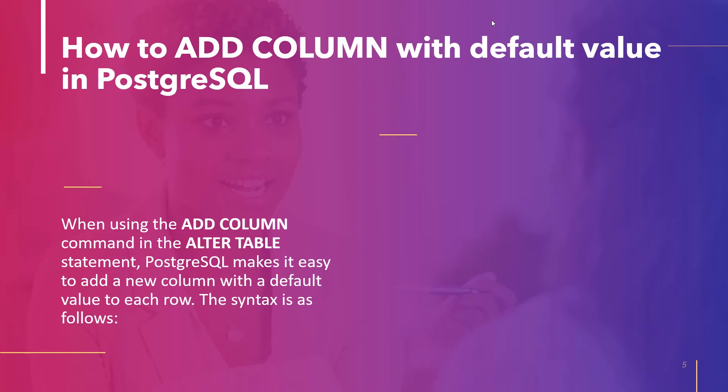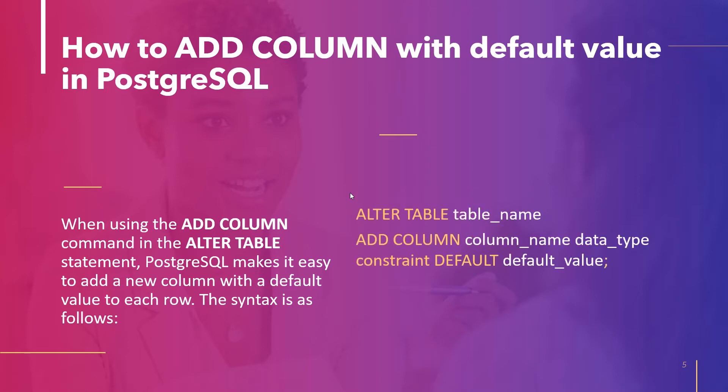The next topic is how to add a column with a default value in PostgreSQL. PostgreSQL facilitates adding a new column with a default value to each row using the ALTER TABLE ADD COLUMN statement. The syntax is: ALTER TABLE table_name, ADD COLUMN column_name data_type, constraint DEFAULT default_value. The default value can be any constant value or an expression. If not specified, the default value is null.